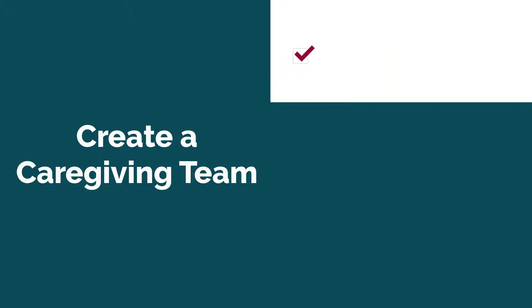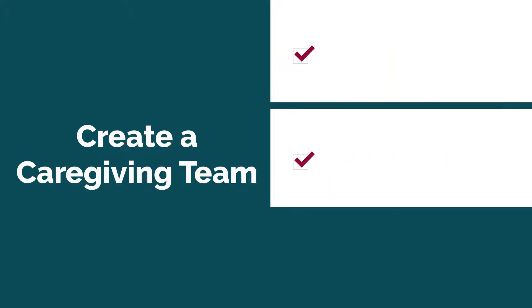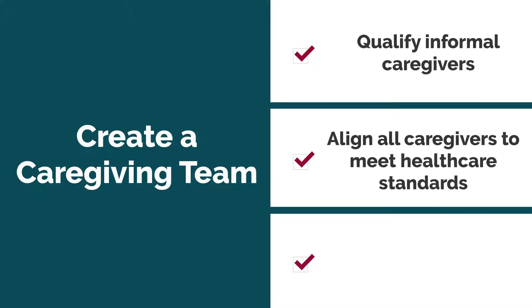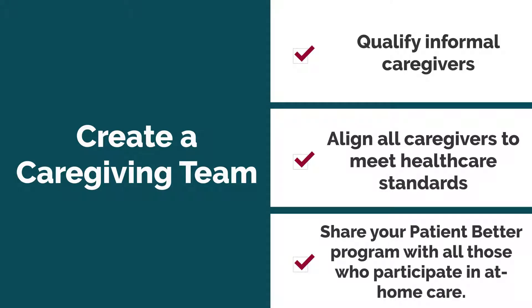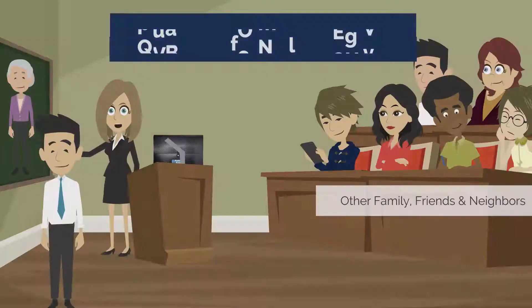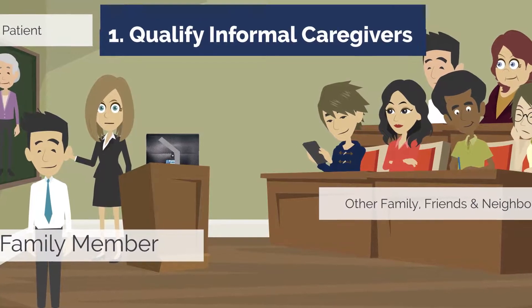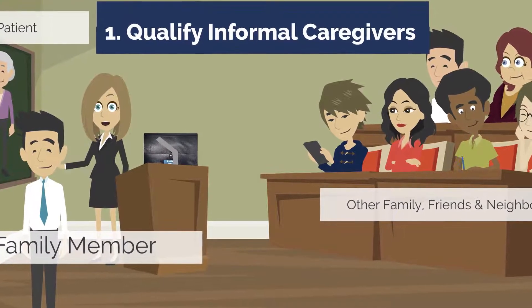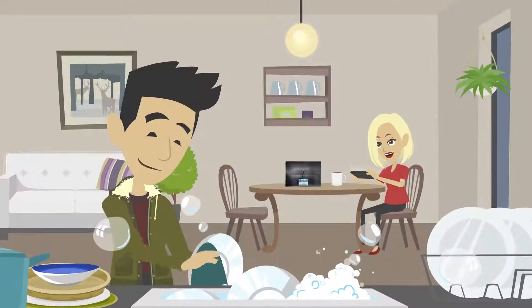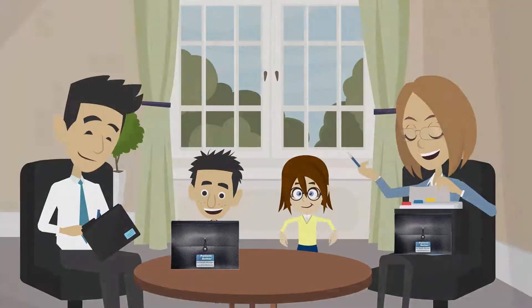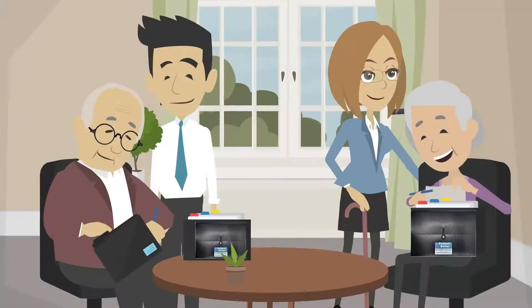Your first assignment is to create a caregiving team. There are three steps to this process: number one, qualify informal caregivers; number two, align all caregivers to meet healthcare standards; and number three, share your Patient Better program with all those who participate in your care. The qualifying participants for the Patient Better program are people who help with the daily activities of care, are not compensated, and have no formal training. This may include yourself, parents, guardians, or anyone considered an informal caregiver.